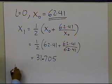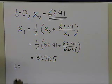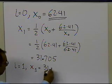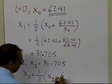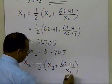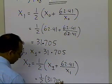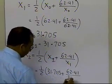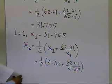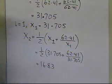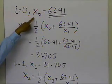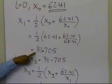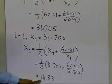Let's do one more iteration. With i = 1, I just found x₁ = 31.705, and now I want to find x₂. Plugging i = 1 into the Newton-Raphson formula: x₂ = ½ (x₁ + 62.41 / x₁) = ½ (31.705 + 62.41 / 31.705), and this number turns out to be 16.83. So the initial guess was 62.41, the first iterative value is 31.705, and the second is 16.83.